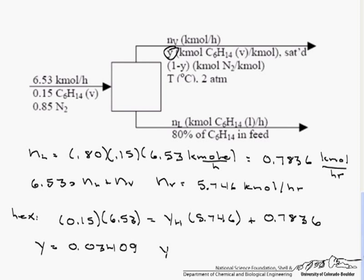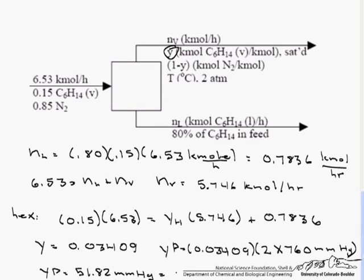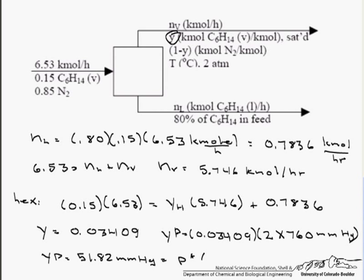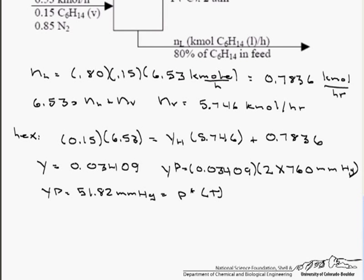So our y sub P equals 0.03409 times our pressure, which stayed constant, 2 times our 760 mm of mercury. So our y sub P equals 51.82 mm of mercury, and this is going to have to equal our vapor pressure at the temperature that we are looking at.